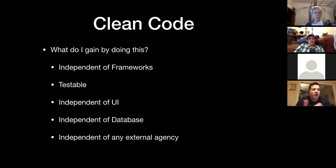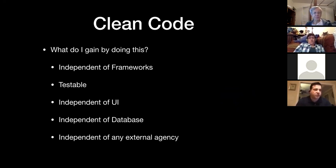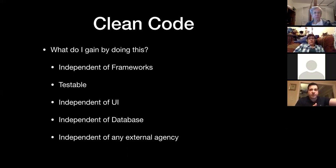Clean architecture produces systems independent of frameworks — the architecture does not depend on any library or feature-laden software. Business rules can be tested without the UI, without a database, without a web server, or any other external element. The UI can change easily without changing the rest of the system. You're independent of a database — you could swap out Oracle, SQL Server, Mongo, Bigtable, or CouchDB. In Android specifically, you could use tools like OrmLite, GreenDAO, or Room, and having clean code separation allows you to plug those tools in wherever needed.